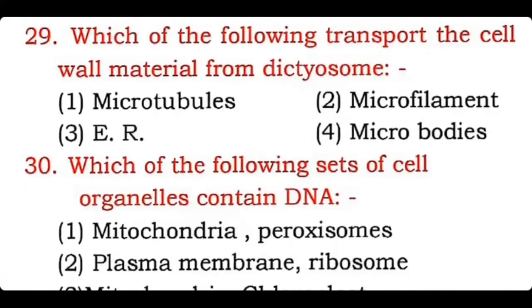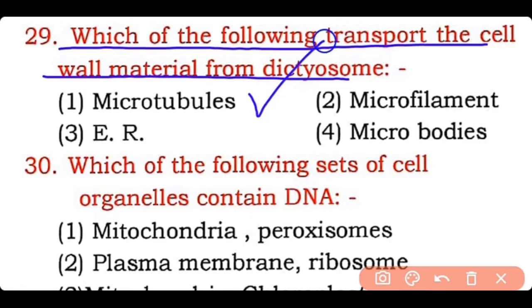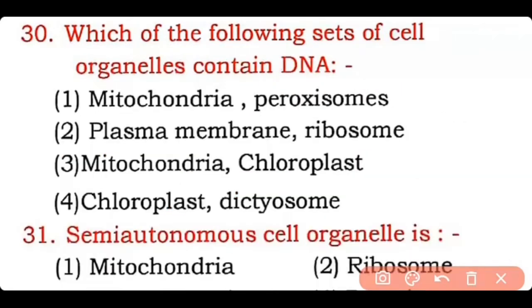Question 29: Which of the following transports cell wall material from the dictyosome — microtubules, microfilaments, endoplasmic reticulum, or microbodies? Correct answer is option one — microtubules transport the cell wall material from the dictyosome.